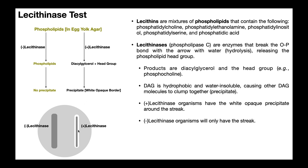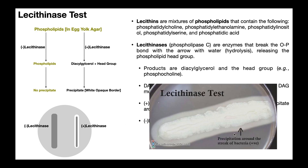The key is: if you see a white opaque clumping border around the organism, you have a positive lecithinase organism. Here's another look at a positive test. Again, here's the lecithinase agar, which is just egg yolk agar. You see the streak here in white, but then you see this white clumping around that entire streak — it almost looks like a halo, kind of like what we saw in the lipase test. And if you see that, you know you have a positive organism.